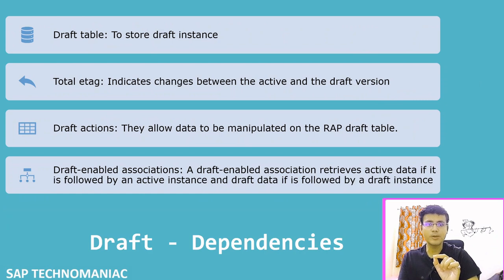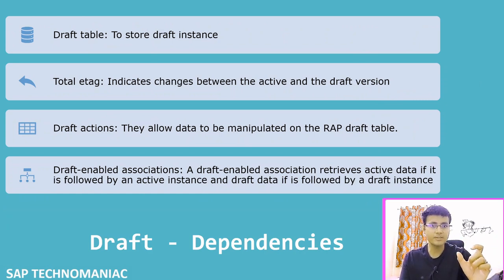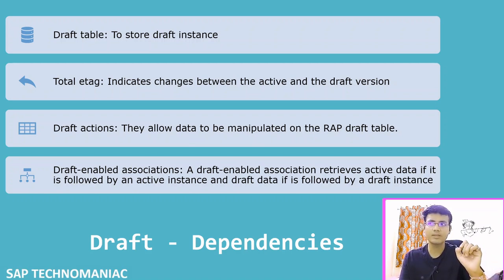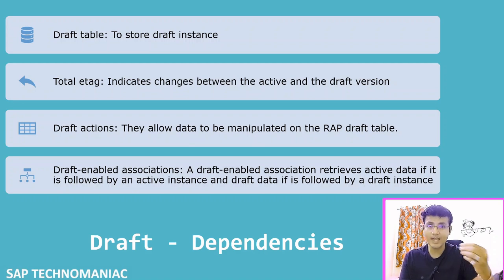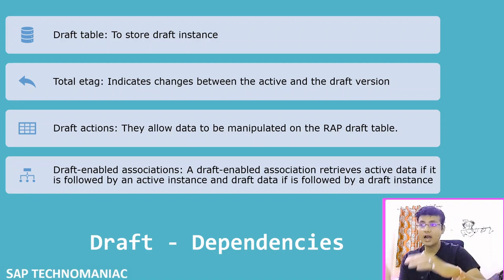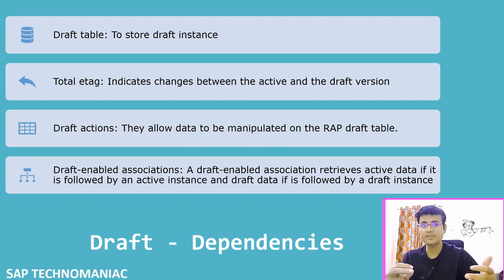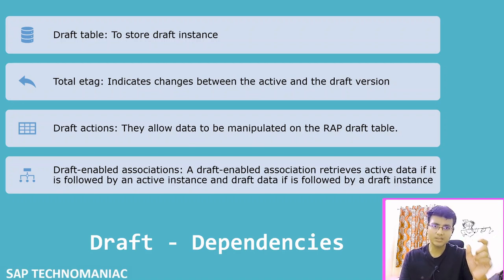First, a draft table — we have to add a draft table for each and every entity available in our business object. Second, the total etag field is mandatory. Third, we have to add draft actions. By default they are implicitly available, which allow us to manipulate the data on the draft tables. However, if you use strict mode, then you have to define these draft actions explicitly as well.